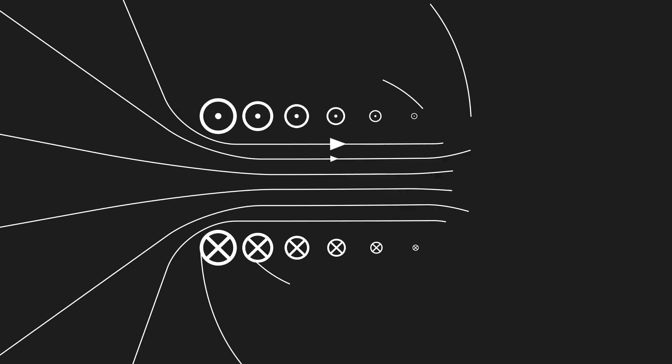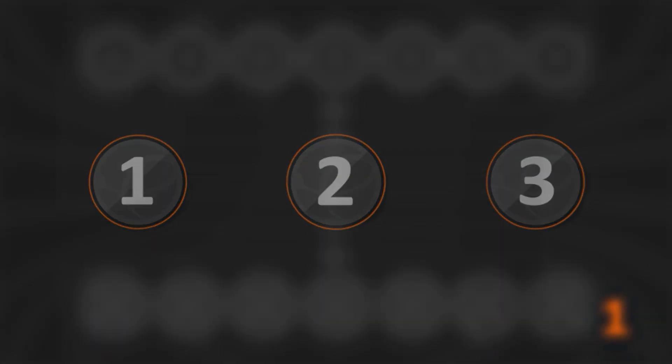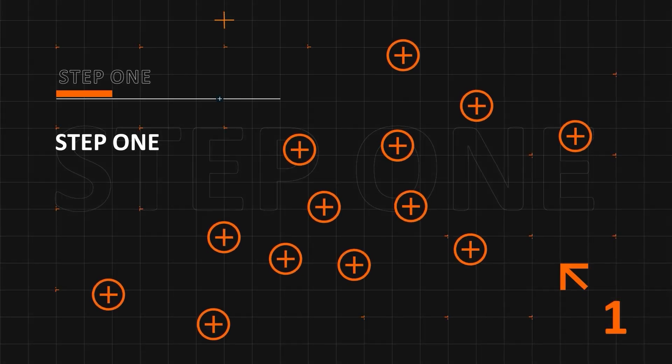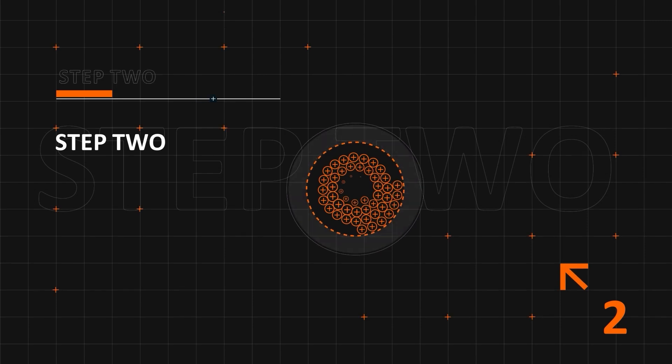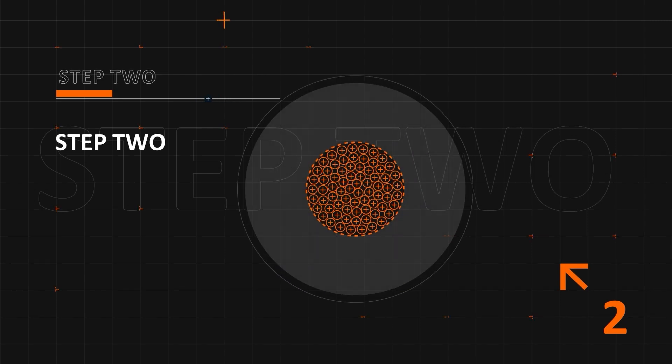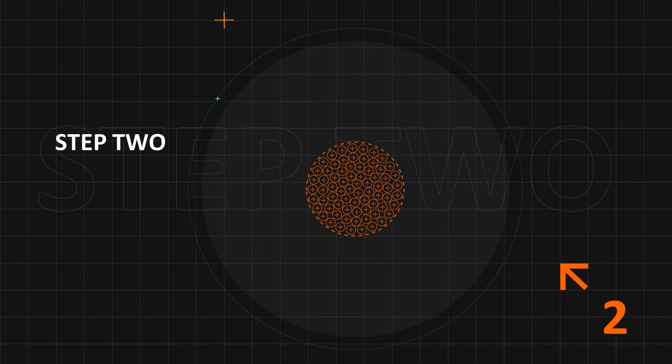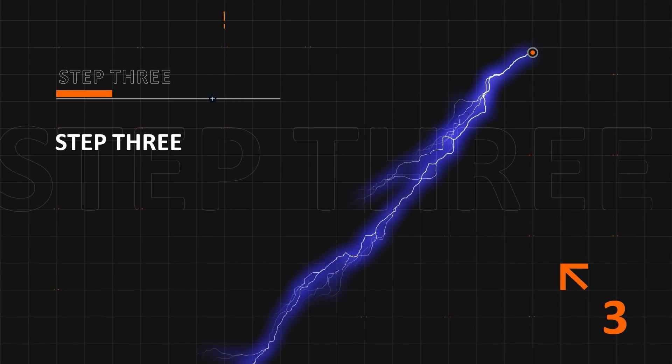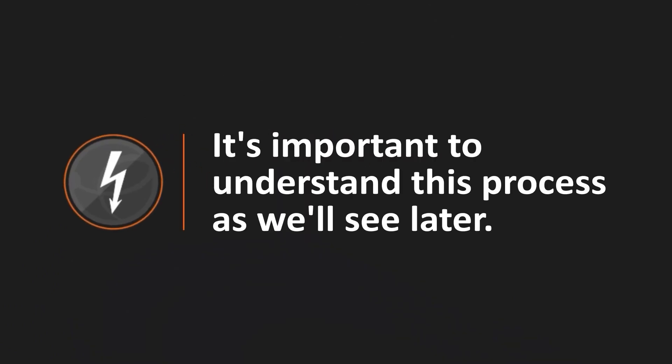In summary, the electrostatic discharge is a three-stage process. One: an electrostatic charge is generated. Two: the charge can accumulate to produce an electric field with high strength and potential. Three: the high field strength leads to the electrical breakdown of an insulating material, usually air. It's important to understand this process as we'll see later.